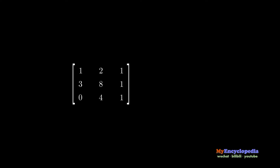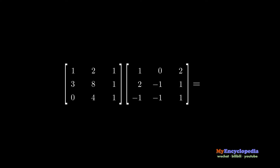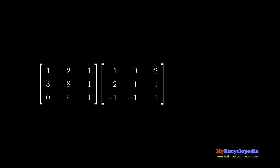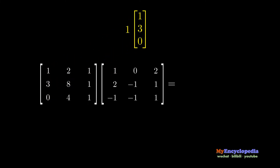Likewise, if a matrix A is right multiplied by another matrix E, the resulting matrix is a column combination of matrix A.